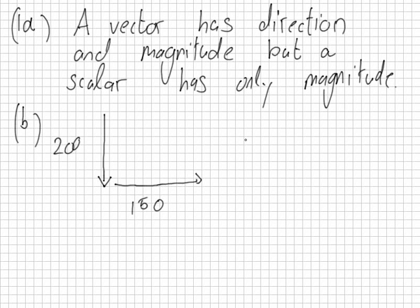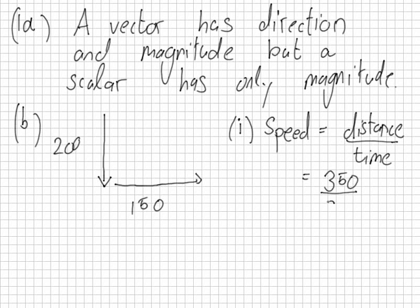So part one is calculate the speed. What's the formula for speed? It's distance over time. So in this case, what would the distance be? 160. Yep, 350 over 80. Can somebody give me that please in the calculator, Andy? 4.37. 4.37 metres per second.